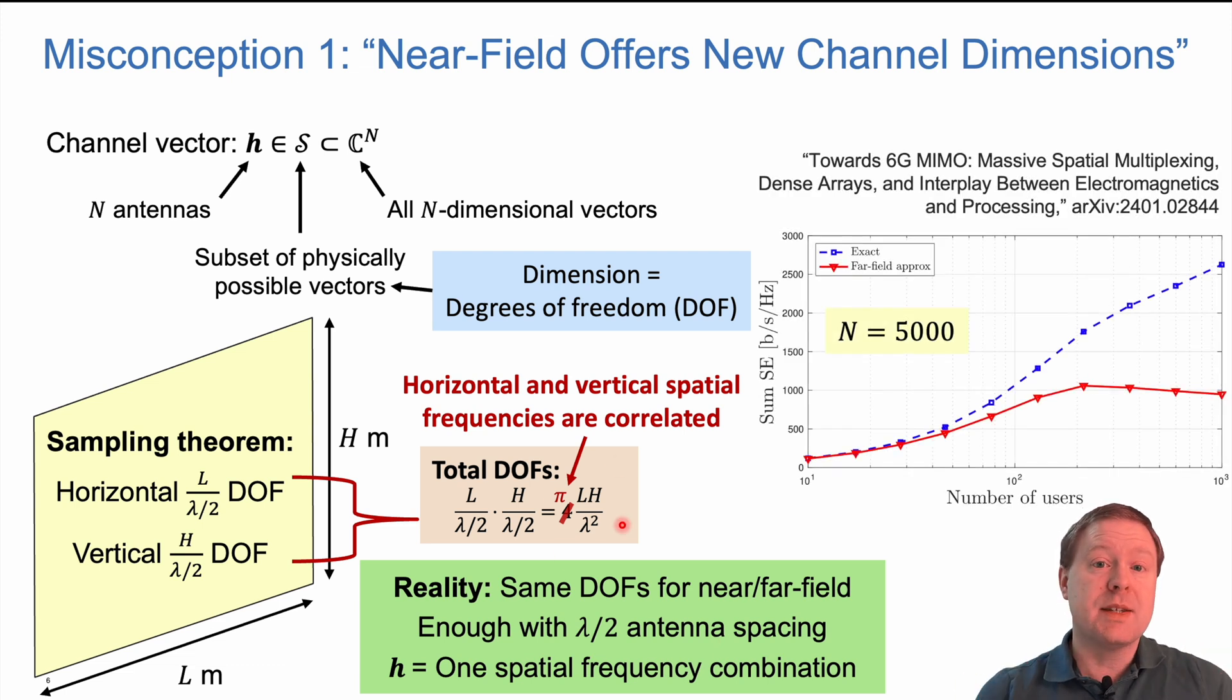We can sometimes communicate more effectively in the near field than in the far field. Here is an example from a paper where we keep dropping users randomly in front of a big antenna array with 5000 antennas. The blue curve shows, when we increase the number of users, the sum spectral efficiency we can deliver goes up. This is when we use both near and far field properties. If we approximate all the channels as far field channels, we can't get as high performance. But every time we serve a user in the far field, we take away some degrees of freedom that can't be used in near field and vice versa. It's the same total amount.